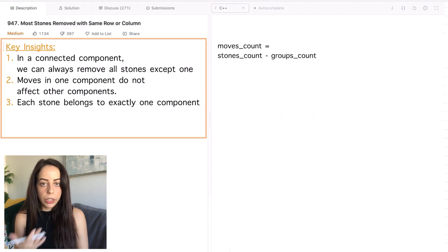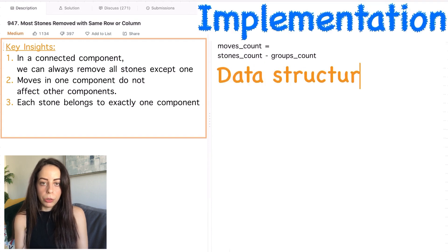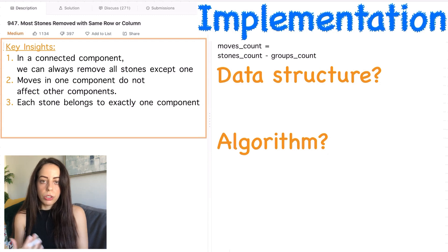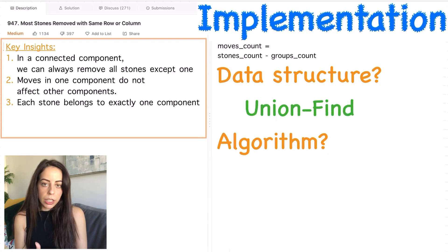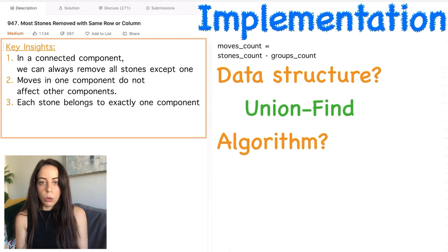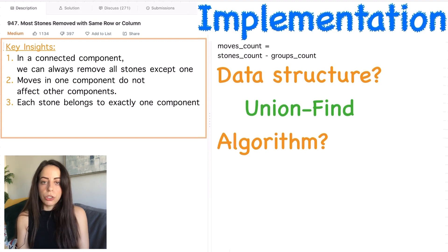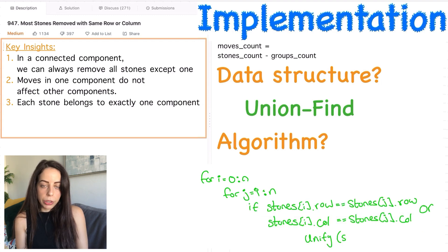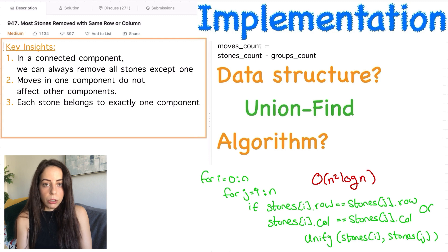Now that we know what we're looking for, we can think about implementation. Because we're talking about disjoint sets, the most natural data structure is Union Find. Union Find allows us to very quickly unify groups together and find which group contains a certain element. These operations take worst-case O(log n), but the amortized time complexity is a very small constant. The most naive algorithm would be to start with each stone as its own group, then iterate over each pair of stones and unify their groups if they share a row or column. That works, but the time complexity is O(n² log n). There is a better way.